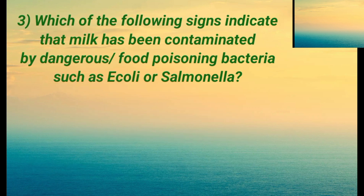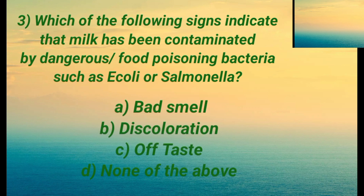Question three: which of the following signs indicate that milk has been contaminated by dangerous food poisoning bacteria such as E. coli or Salmonella? Option A is bad smell. Option B is discoloration. Option C is obvious. Option D is none of the above. The right answer is D: none of the above.